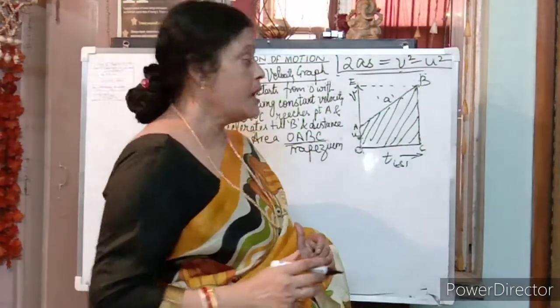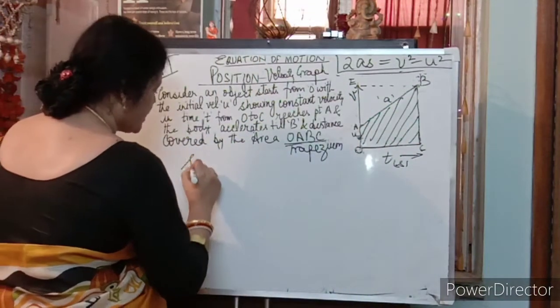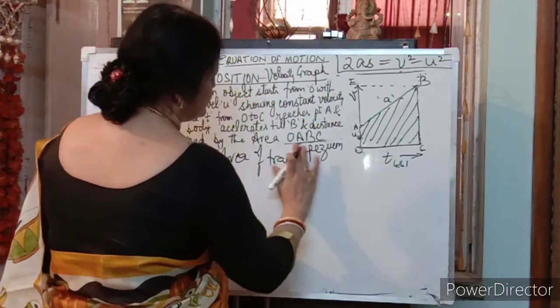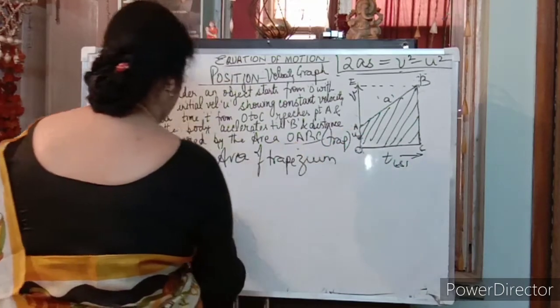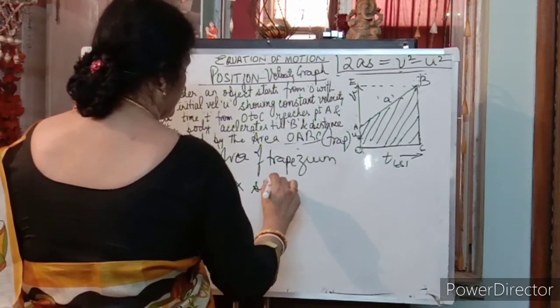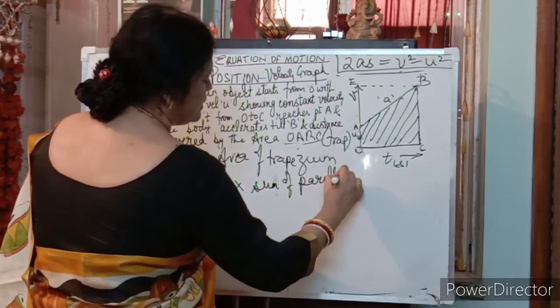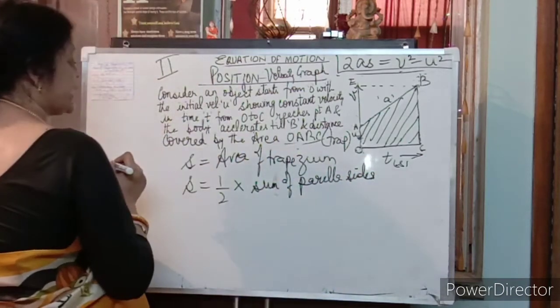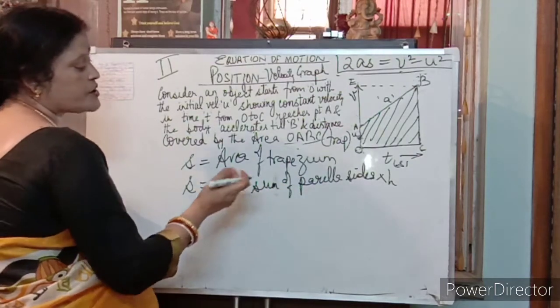Area covered O, A, B, C. Jo ki aapka trapezium hota hai. Yes student, what is trapezium? In which all the sides are not equal. So here all the sides are not equal. So the area covered by this trapezium is O, A, B, C. Simple. Total distance is equal to area of trapezium. Yes student, what is area of trapezium? That is half into sum of parallel sides is equal to area of the trapezium. So half into parallel sides and into height.